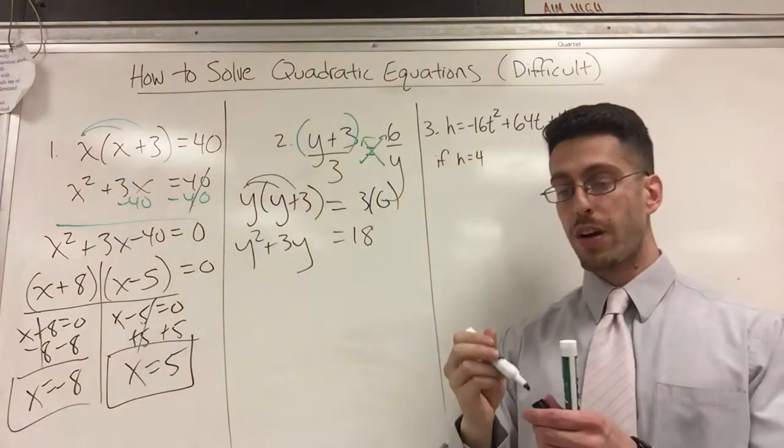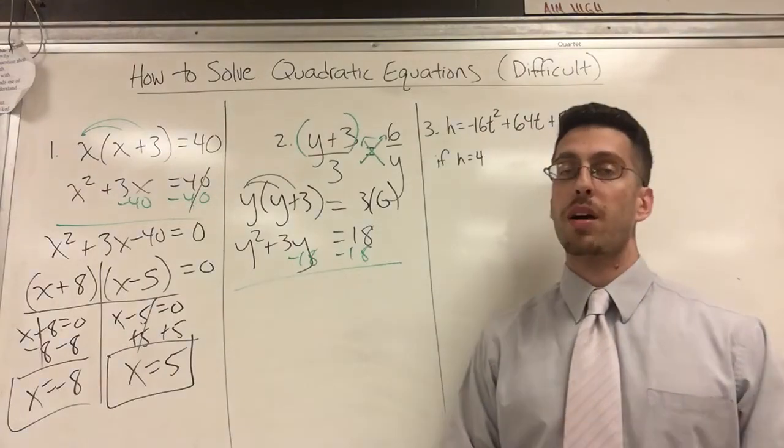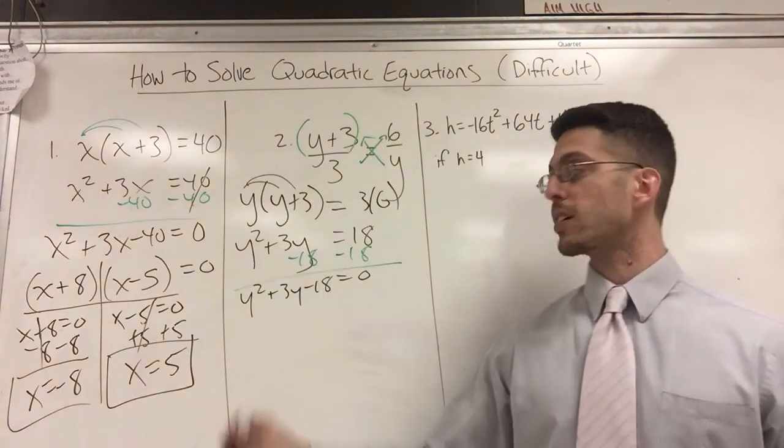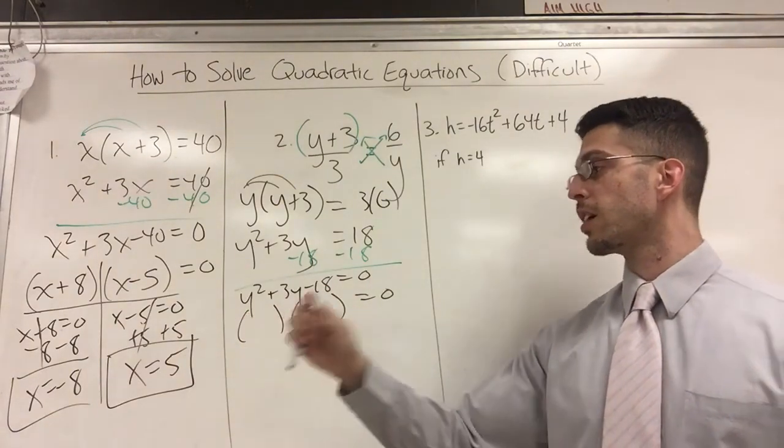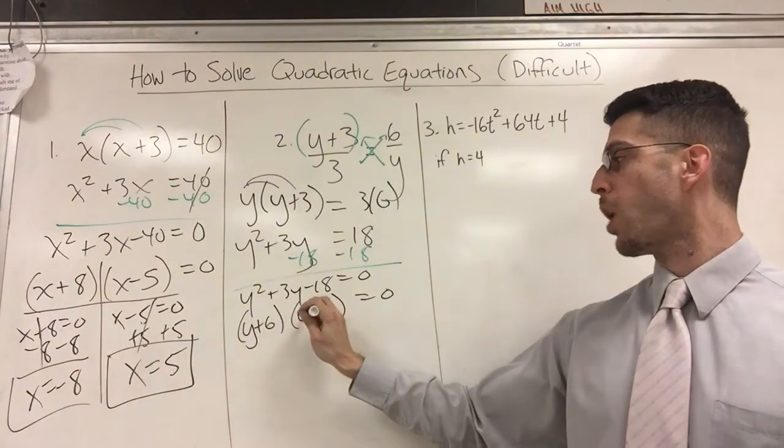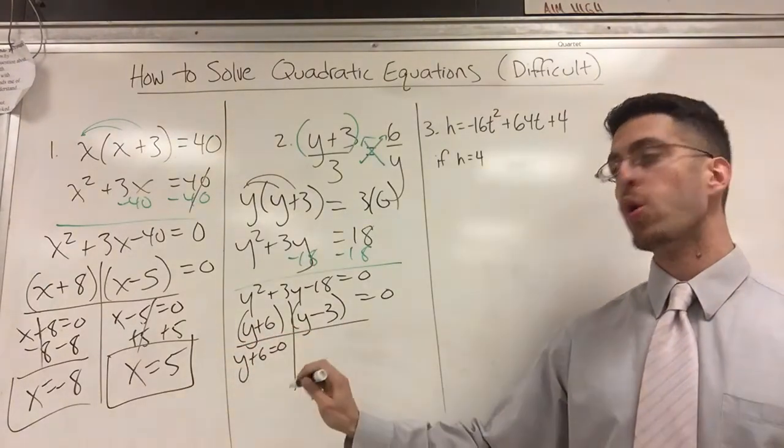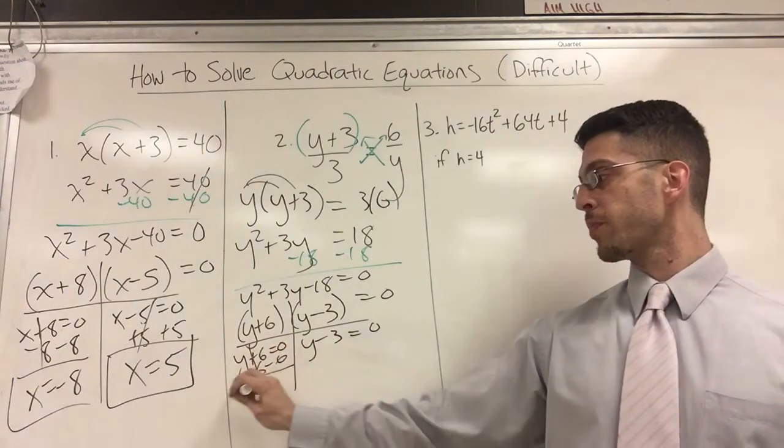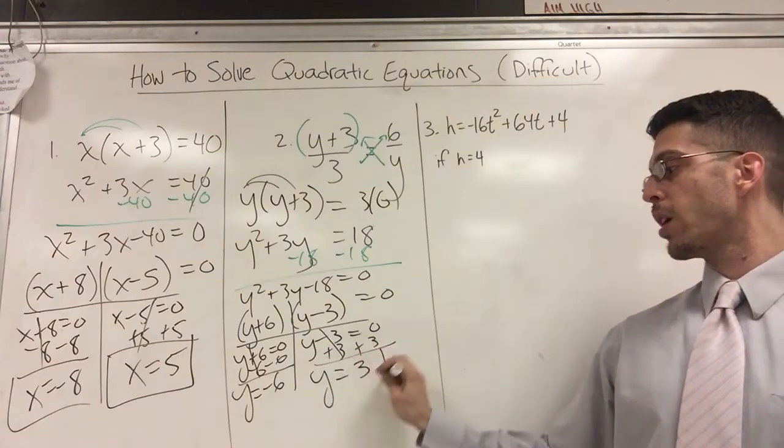I got Y squared plus three Y equals 18. Same situation as over there. I need it in standard form. So I'm going to do inverse. Subtract 18 on both sides. No like terms to combine. So I just write what I see. Y squared plus three Y minus 18 equals zero. Easy. Sum product. What multiplies to negative 18 and adds to positive three? Let's see. Nine and two, six and three, 18 and one. I'm going to go with six and three. Y plus six, Y minus three. Then I have my T chart. Y plus six equals zero or Y minus three equals zero. Subtract six, subtract six. Y equals negative six or add three, add three and Y equals three. Two answers.